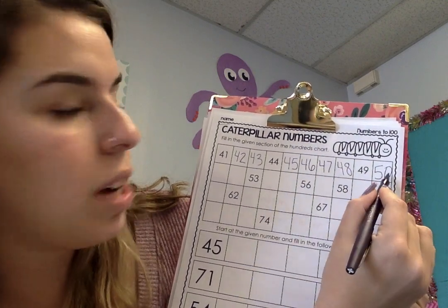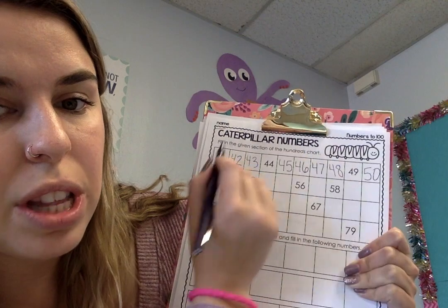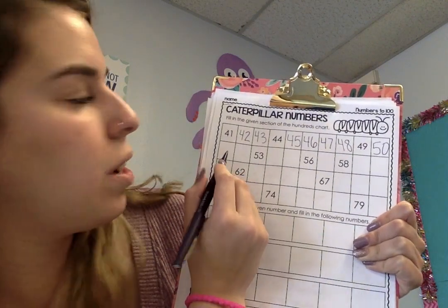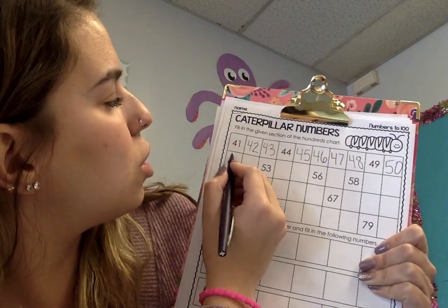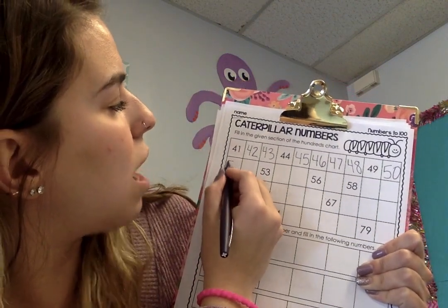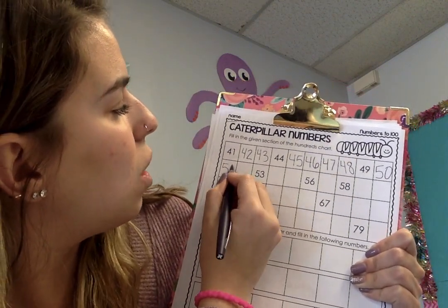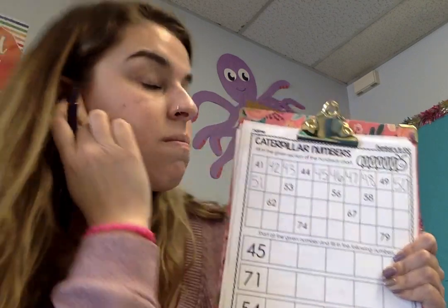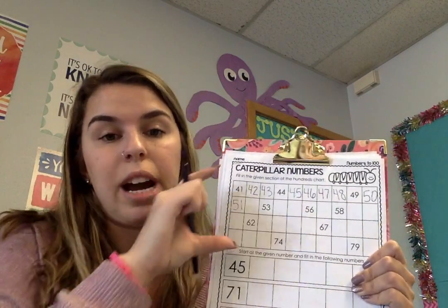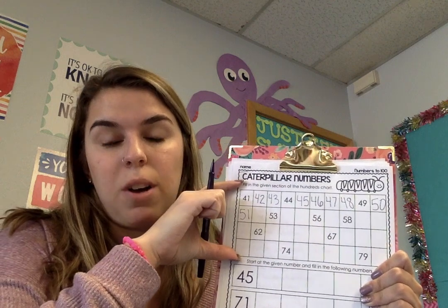Then I'm going to come down to the next row. After 50 is 51, and I'm going to keep going until I've filled out this whole entire top section.